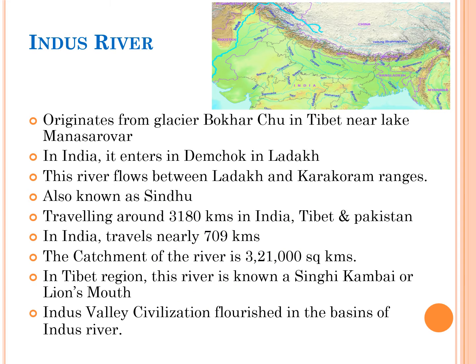We will discuss about one of the important Himalayan rivers, that is the Indus river and its tributaries. It is a Himalayan river system and is one of the world's largest river basins. The Indus river originates from a glacier called Bokarchu in Tibet near Lake Manasarovar. In India, this river enters an area called Demchok in Ladakh and flows between the Ladakh and Karakoram ranges. The Indus river is also known as the Sindhu river.